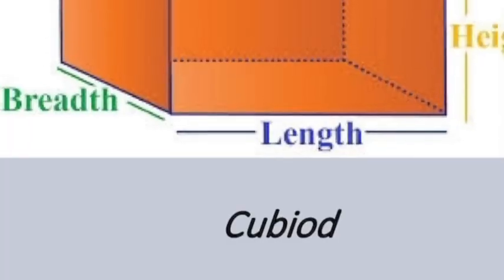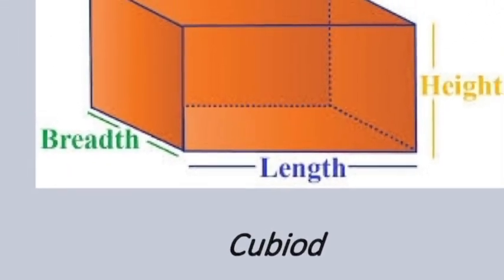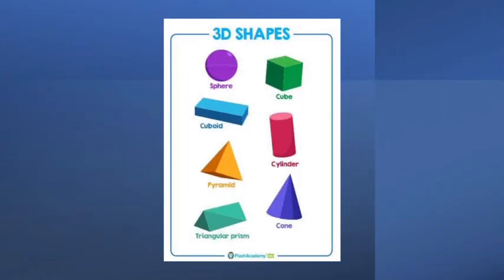Once, see the cube. So what is there here? Length, breadth. One new one is there — what is that? Height. So here, how many dimensions are there? Here, three dimensions are there. So what is that, children? Length, breadth and height. So once, see the 3D shapes.